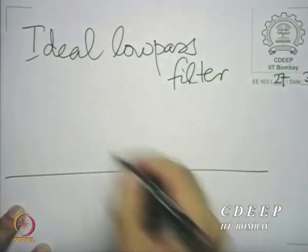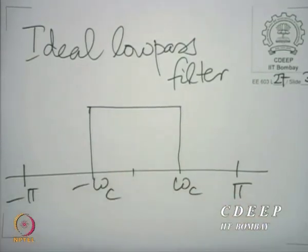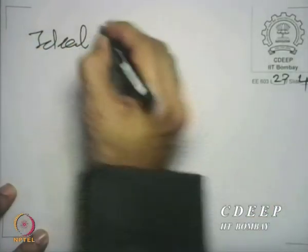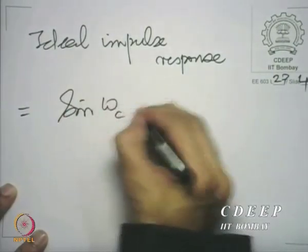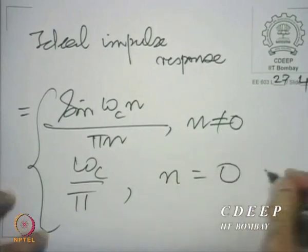Let us take the example of a low pass filter. If you have an ideal low pass filter with a given frequency response, we know what its ideal impulse response would be: h_ideal(n) = sin(ωc·n) / (π·n) for n ≠ 0, and ωc/π for n = 0. We are familiar with the fact that this is an irrational filter. It is also infinite in length in both directions. What precludes it from ever being realized: it is infinitely non-causal, it is unstable, and it is irrational.